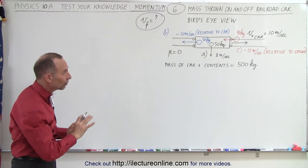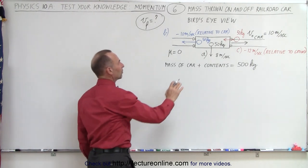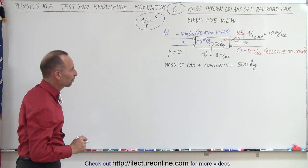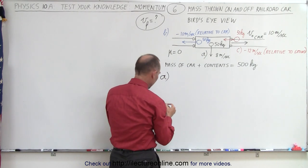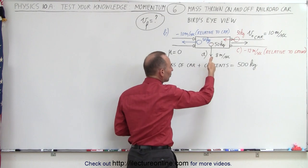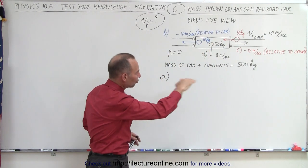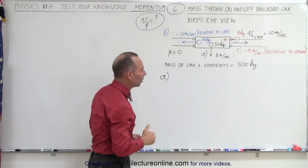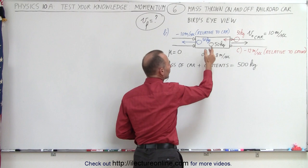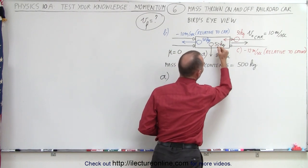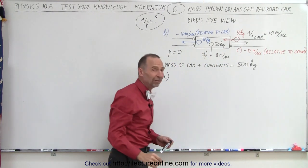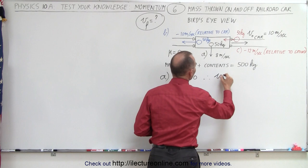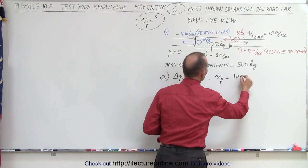We need to take a few things into consideration, especially when talking about velocities relative to the car, relative to ground, and perpendicular to the velocity of the train. For part A, when we throw a bag sideways we're only changing the momentum in the sideways direction — we're not changing the momentum in the horizontal direction. Therefore we don't expect a change in the velocity of the car. There is no change of momentum in the x direction, so delta P in the x direction equals zero, and therefore the final velocity of the car is still 10 meters per second.